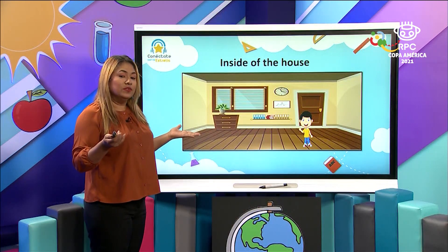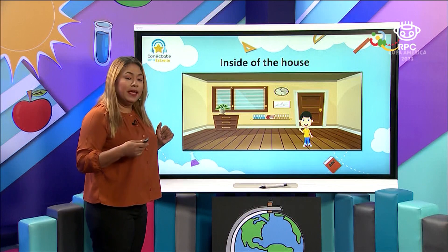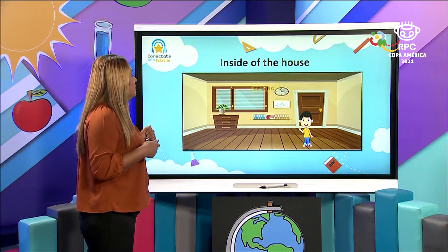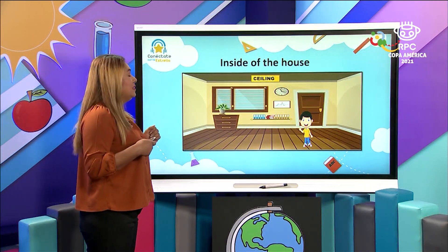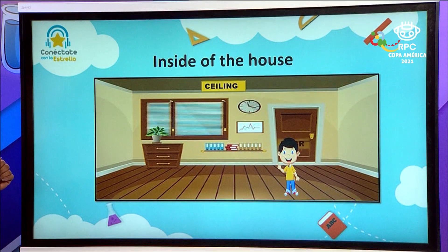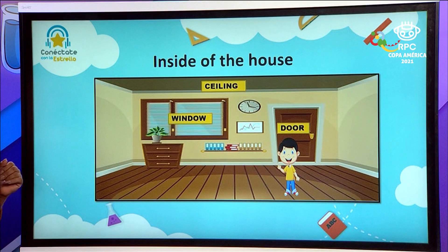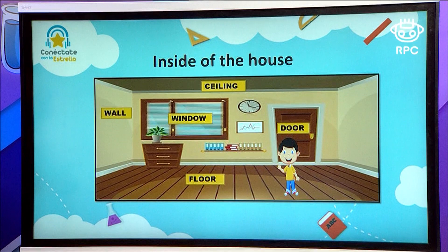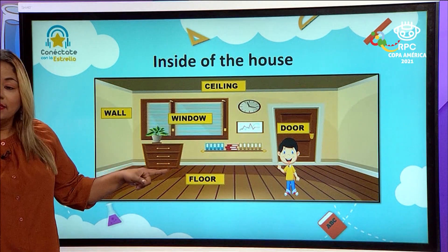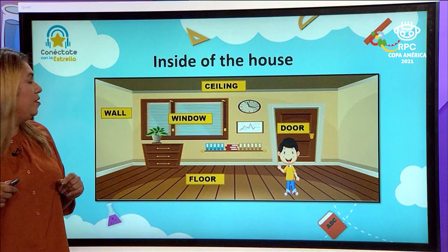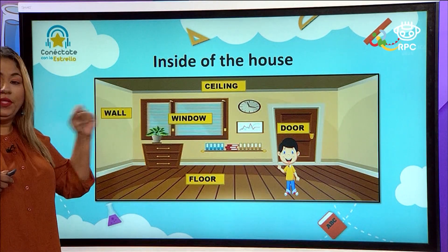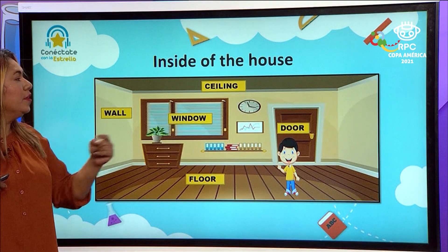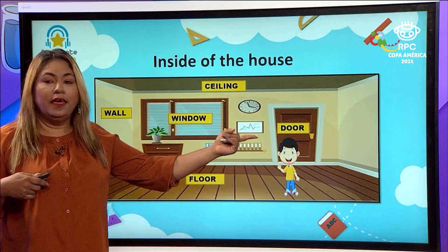Inside of the house, we also have different parts. Let's review. This is the ceiling, door, window, the floor, and the wall. And this is me. Let's review: wall, window, floor, ceiling, and door.